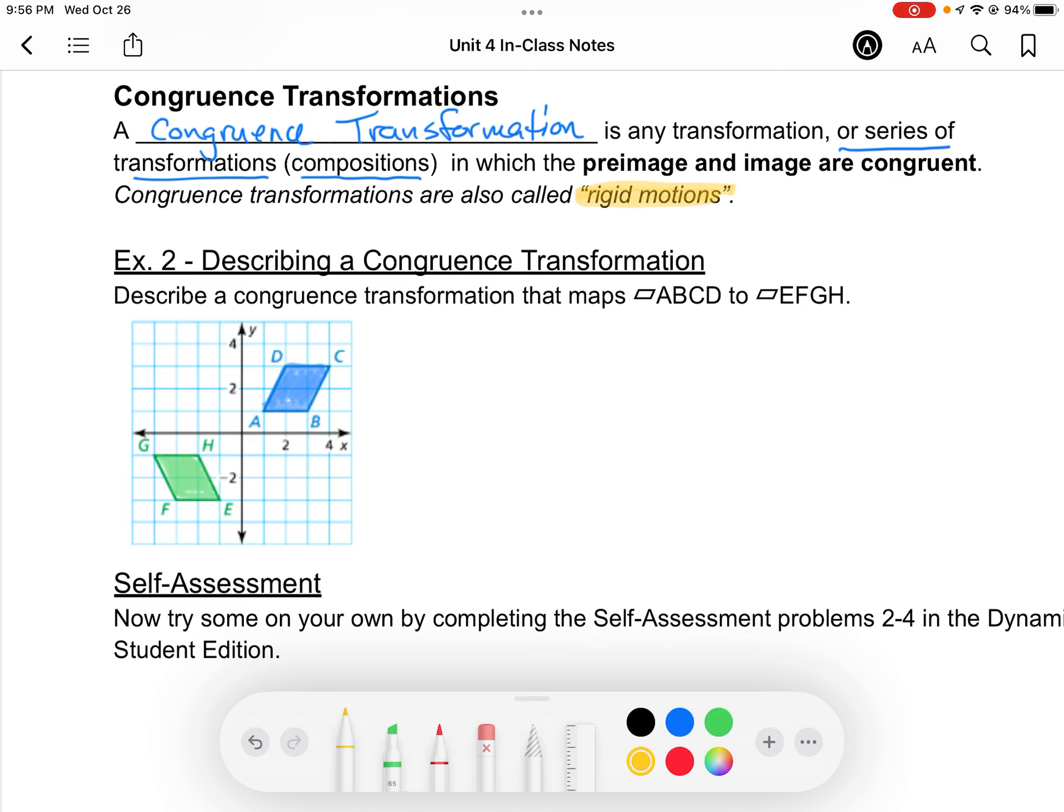Now, the order of these letters is very important. A corresponds to E, B corresponds to F, C corresponds to G, and D corresponds to H. So that's kind of important. So as you look at this, we're kind of doing two different things. One way that we could get this transformation to happen is by first reflecting the parallelogram, the blue parallelogram, over to the other side of the Y-axis.